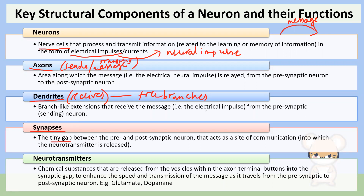The synapse is the tiny gap between two neurons. If we have neuron A and neuron B, there'll be a tiny gap between them. Neuron A initially sends or lays down the message onto that gap, and from there it gets received by neuron B. It's best visualized as a tiny area of space between two neurons onto which the message and neurotransmitter are released. Neurotransmitters are chemical substances — you can contrast them with the neural impulse, which is electrical in nature, whereas a neurotransmitter is chemical in nature.